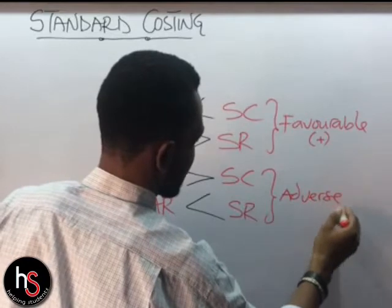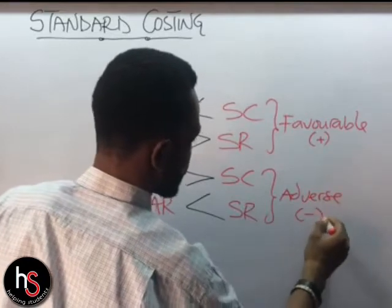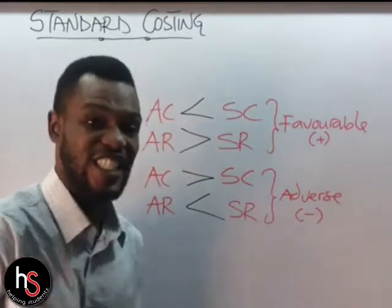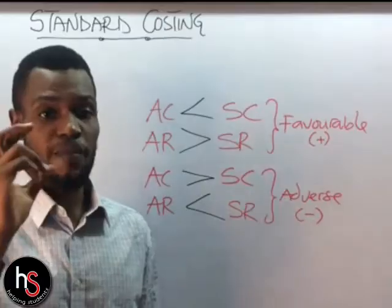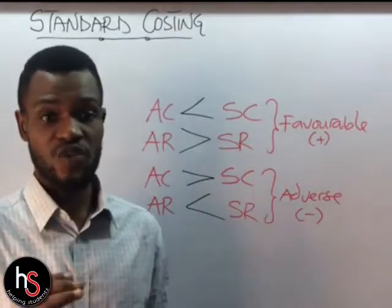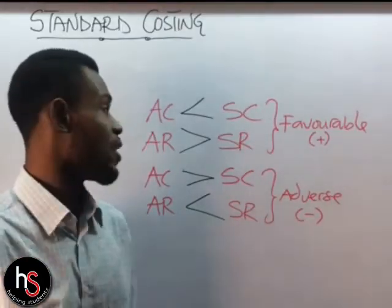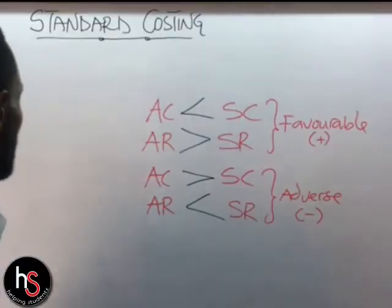It is adverse and is always presented with the negative sign. We will now focus mainly on the material variance and the labor variance.